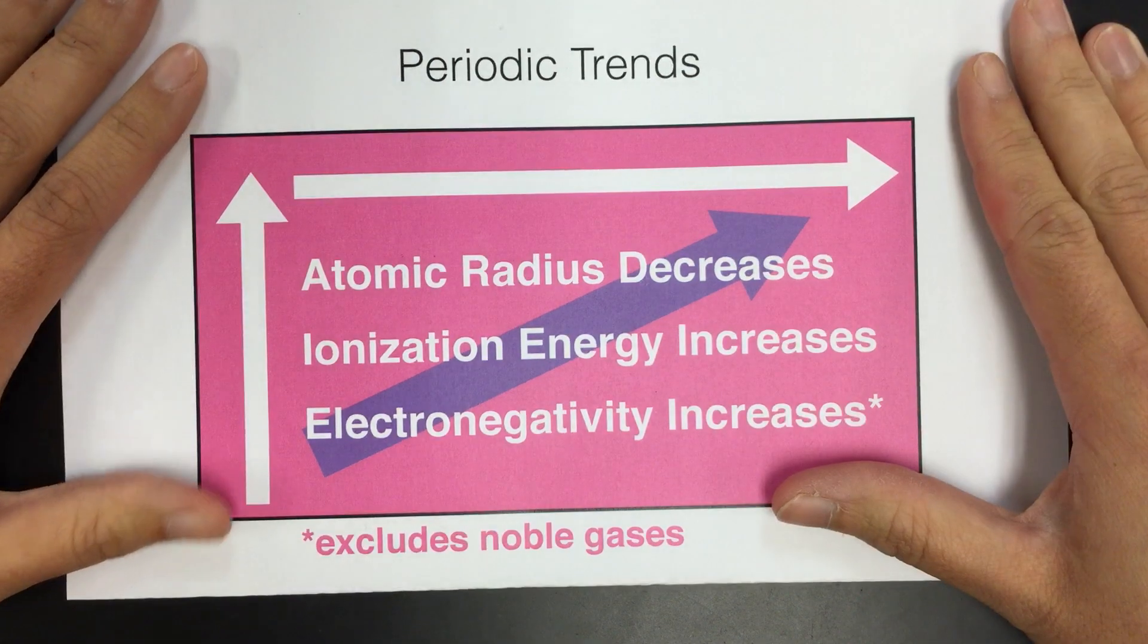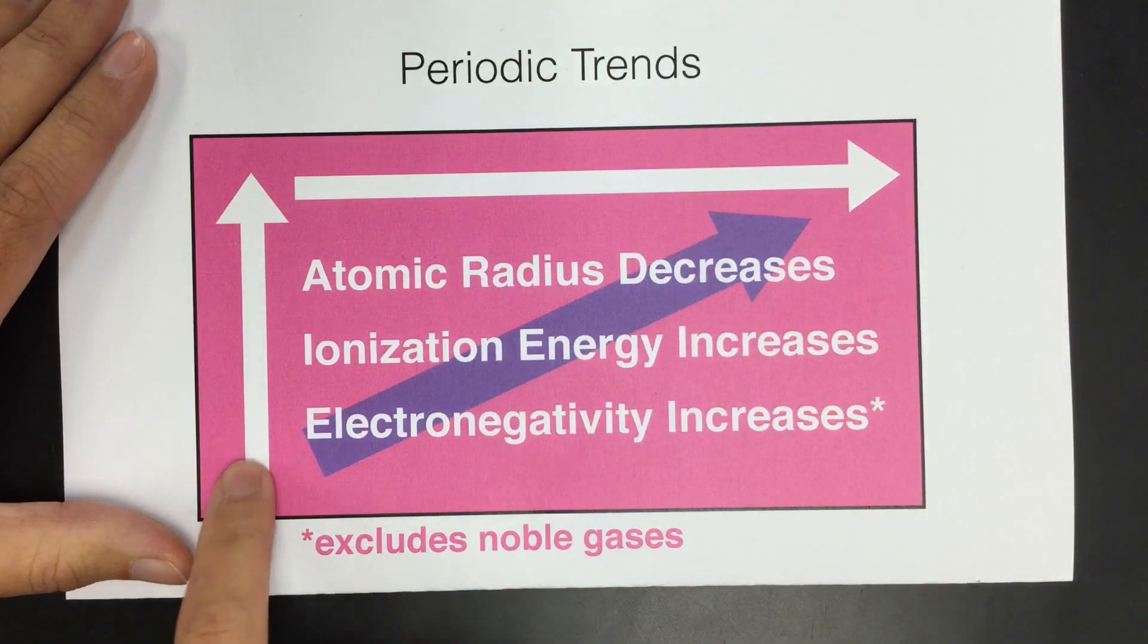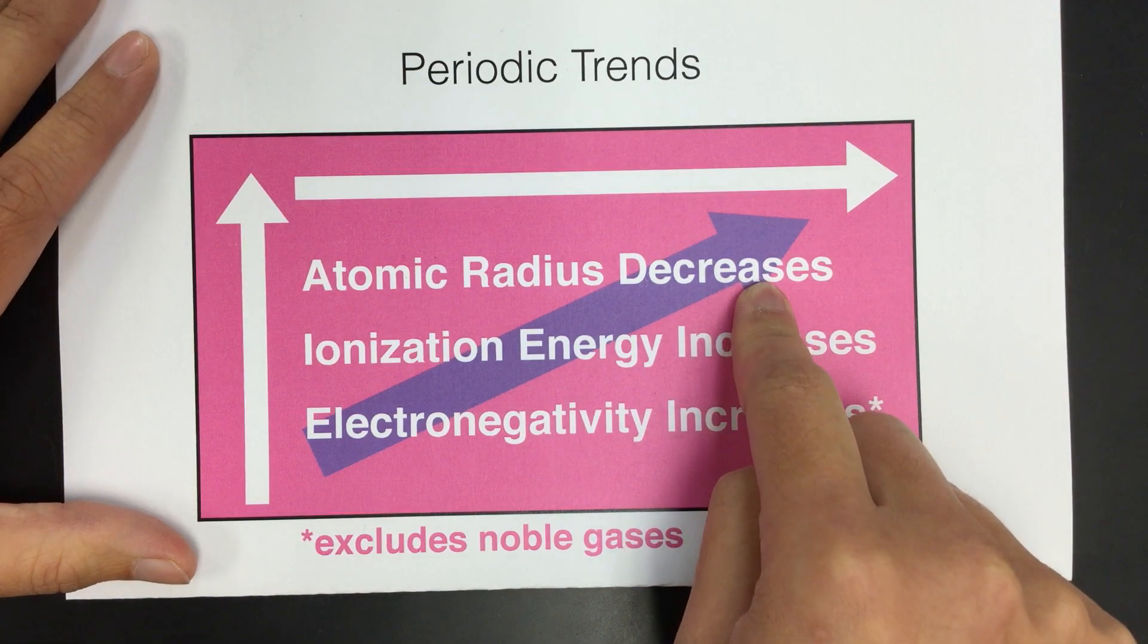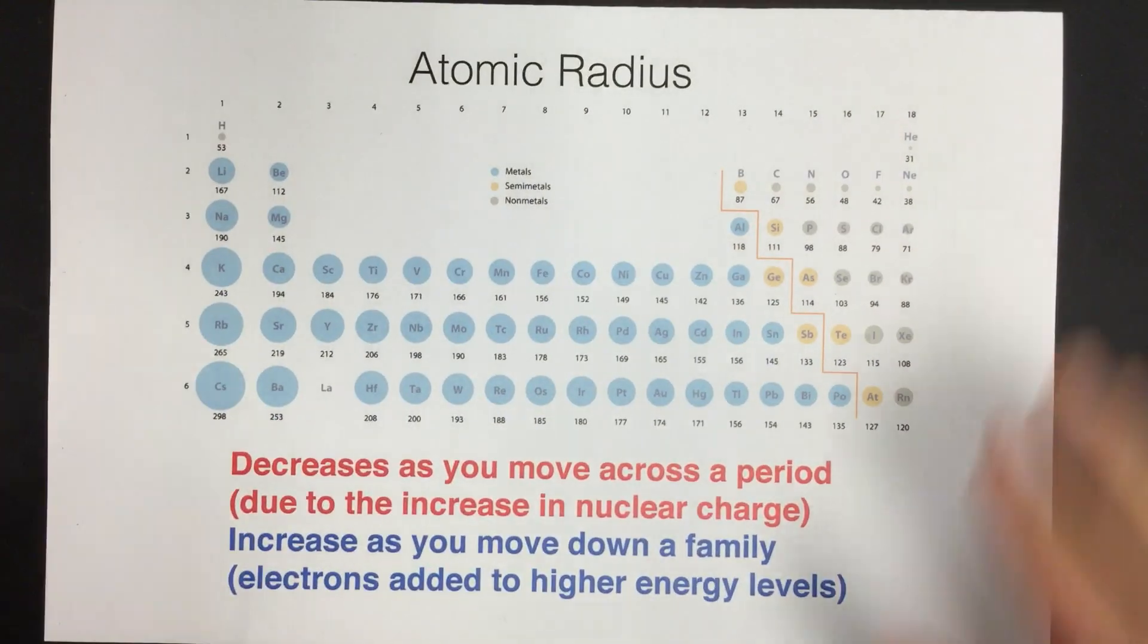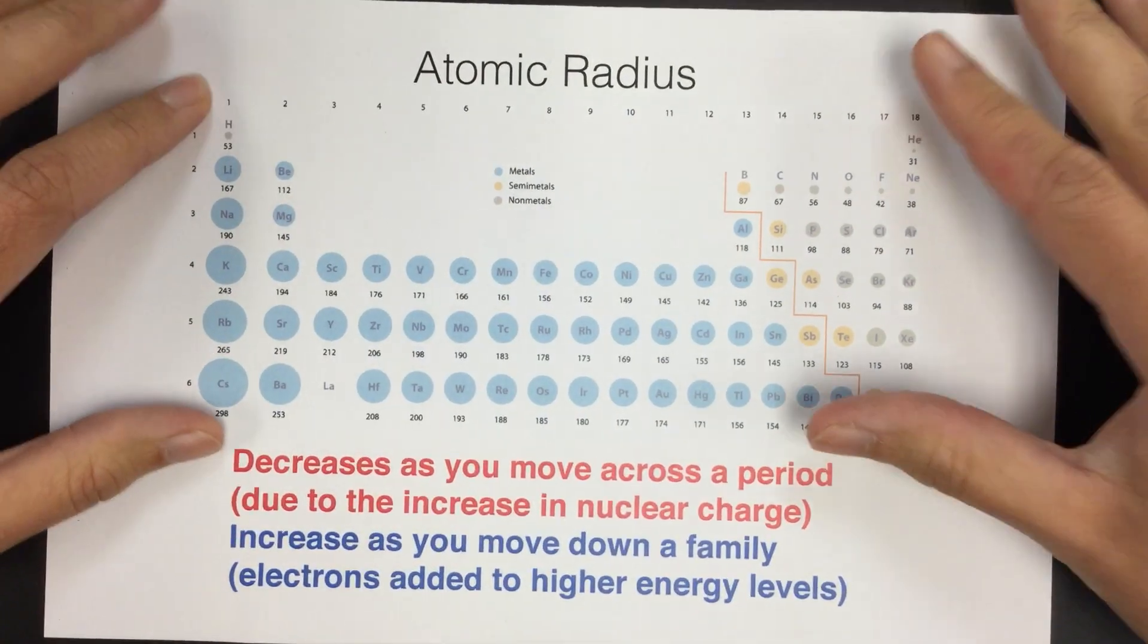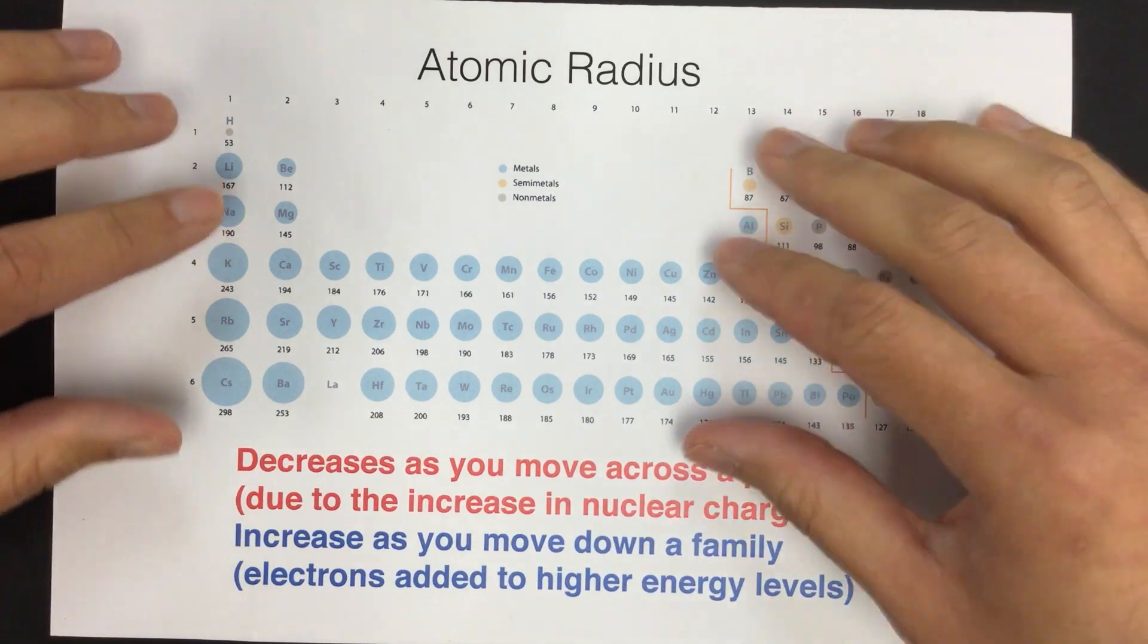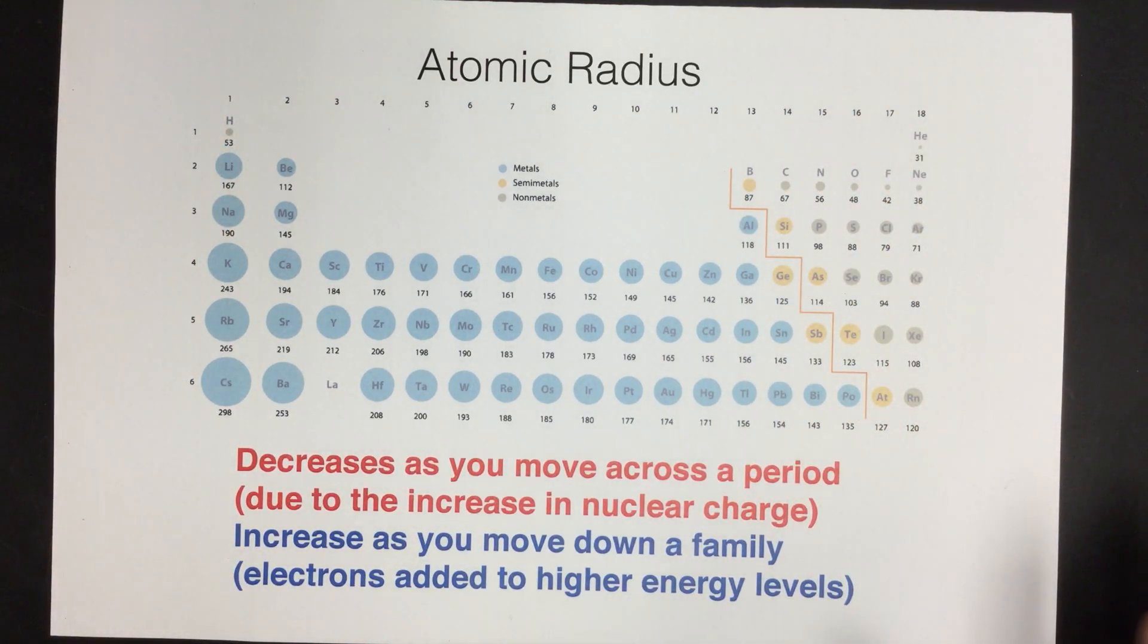So here we have our summary chart of the periodic trends, and it tells us that as we go up and to the right, atomic radius will decrease. So the size of the atoms will get smaller. So let's take a closer look at the trend here. And here we have a really cool visual, which of course you don't have on your periodic table, but it's a nice way to see things. But we're going to learn the trend so that we can understand how the size changes as we move up and down and across the table.